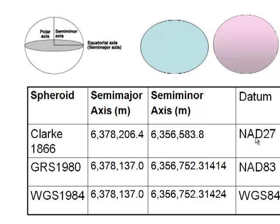Here's a summary slide. Datums define which spheroid is being used — the assumed shape of the globe. NAD27 is based on the ancient Clark 1866 spheroid. NAD83 and WGS84, which is GPS, have identical semi-major axes from the center of the Earth to the equator. So there's very little difference between NAD83 and WGS84, but a big difference between those two and NAD27.